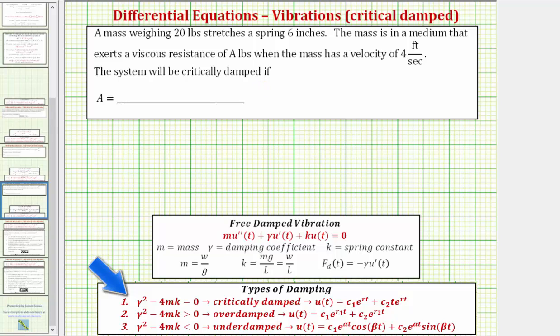If gamma squared minus 4mk is greater than zero, the system is overdamped, and if gamma squared minus 4mk is less than zero, the system is underdamped.